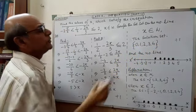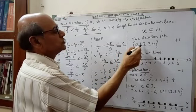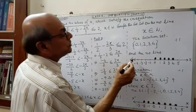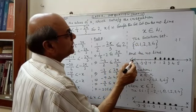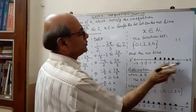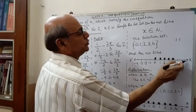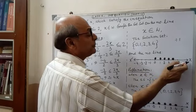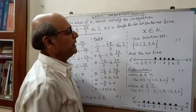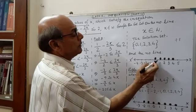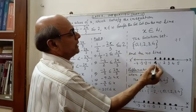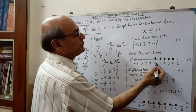Then you have to represent the solution set on the number line. For the number line, you have to draw a straight line. After drawing the line, put two arrows at the two ends — that is known to you. Then give the name of the line as x. Before plotting, you have to make the scale.